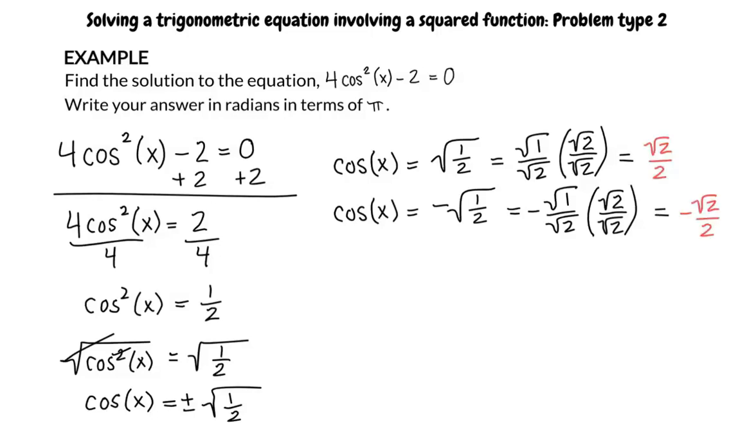After simplifying, cosine of x is now equal to square root of 2 over 2 and negative square root of 2 over 2, and any other angle that is coterminal to this.